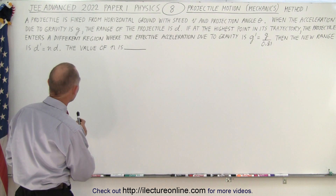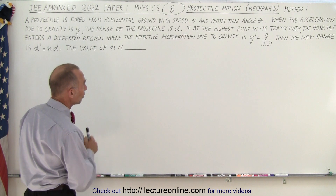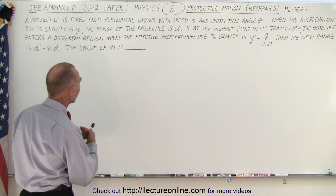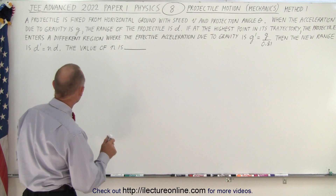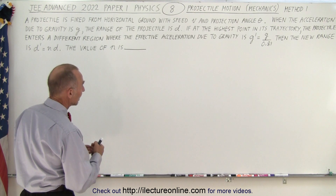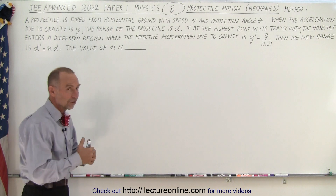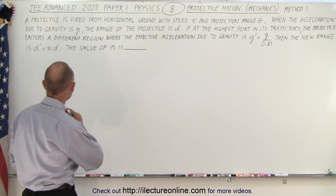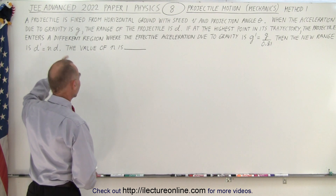A projectile is fired from horizontal ground with speed v and projection angle theta. When the acceleration due to gravity is g, the range of the projectile is d. If at the highest point in its trajectory the projectile enters a different region where the effect of acceleration due to gravity is now g divided by 0.81 — in other words it's now a greater acceleration due to gravity — then the new range is d prime, which is n times d, and you're trying to find the value for n.